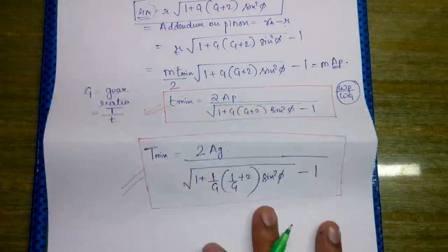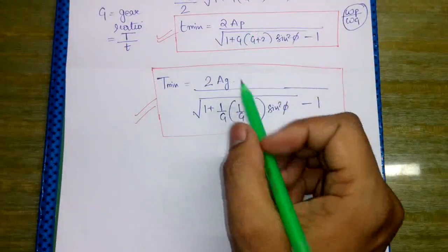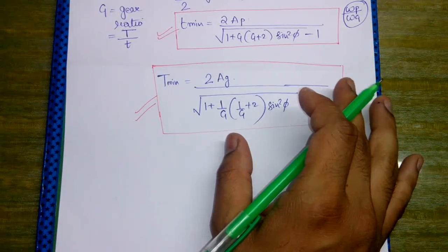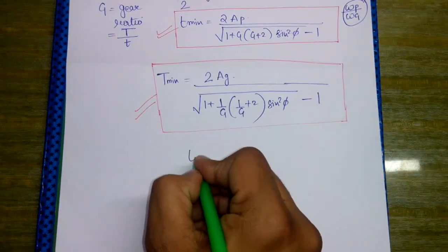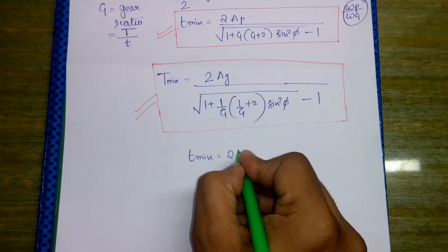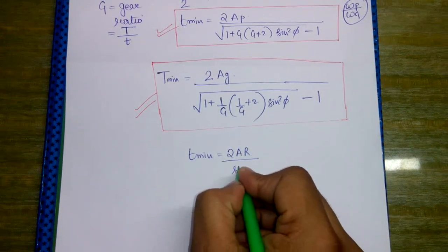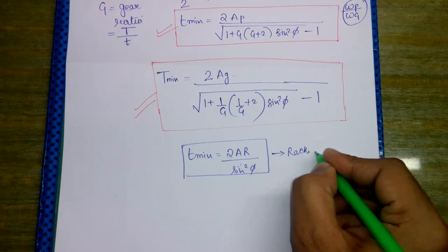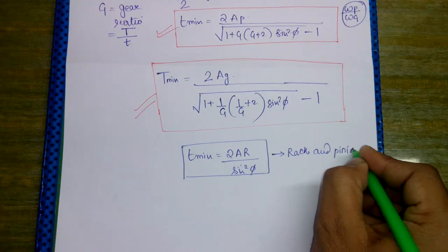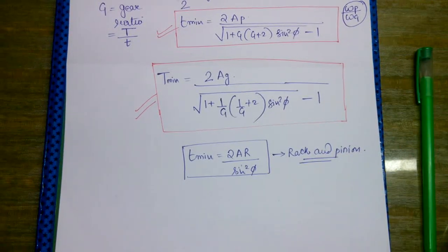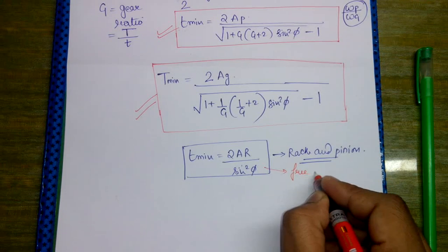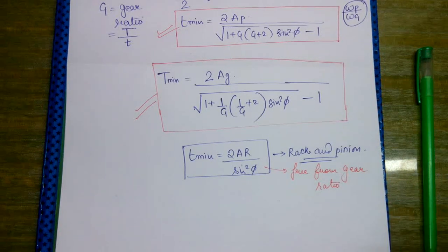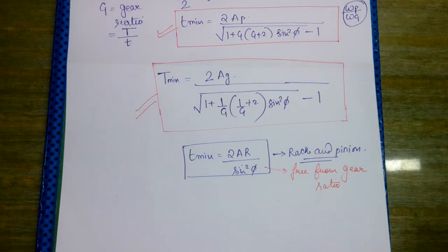Please note that these formulas are not applicable for rack and pinion. The formula for the minimum number of teeth on the rack is: T minimum equals 2 AR divided by sin squared phi. This formula is used specifically for rack and pinion, and it is completely free from the gear ratio.